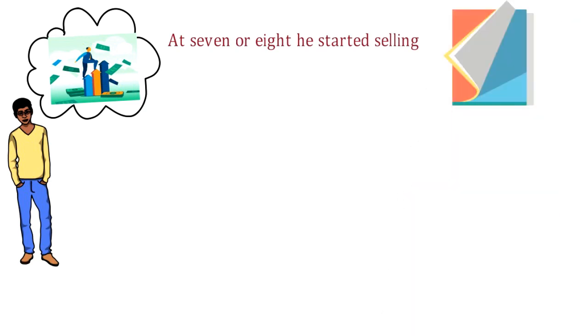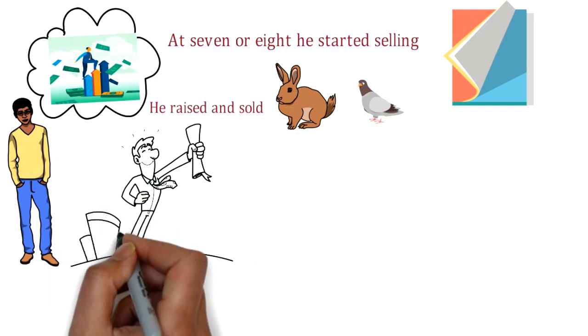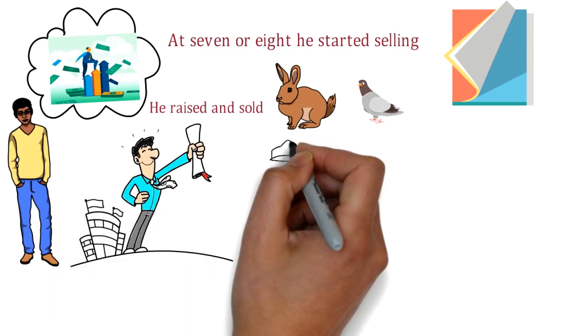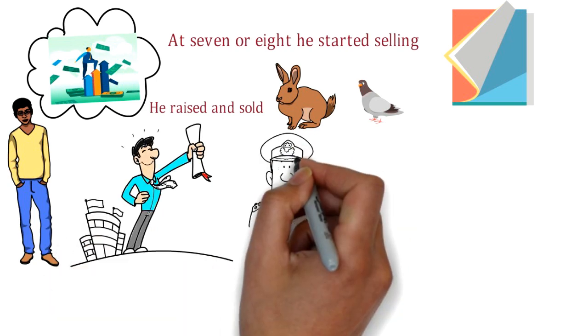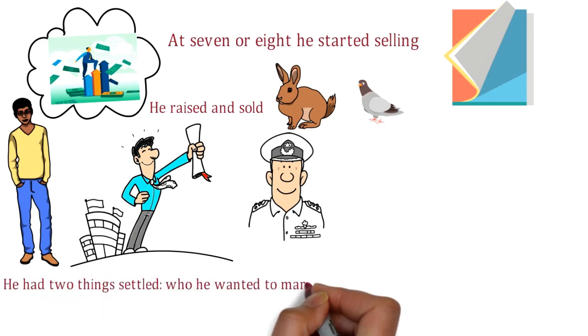After graduating from the University of Missouri with a business degree, he joined the army. By the time he went to the army, he had two things settled: who he wanted to marry and what he wanted to do for a living - retailing.